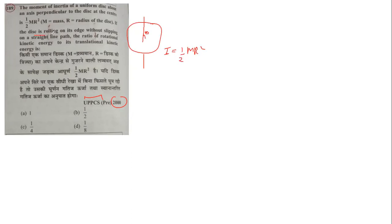After that, if the disc is rolling on its edge without slipping on a straight line, this disc is rolling on its edge. The ratio of the rotational kinetic energy to the translational kinetic energy.